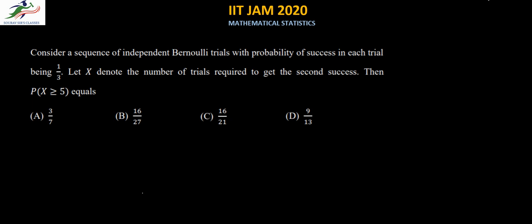In this question we are given a sequence of independent Bernoulli trials with the probability of success of one third, and we are told that let X denote the number of trials required to get the second success. Then what is the probability of X greater than or equal to five?